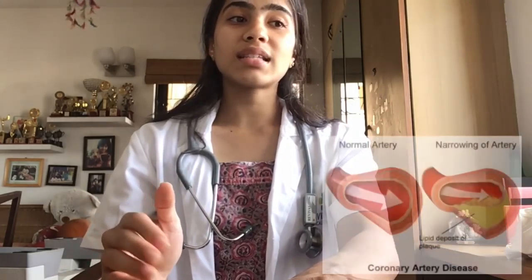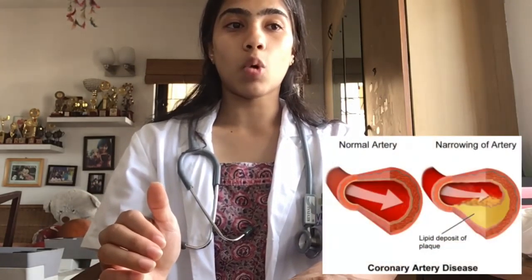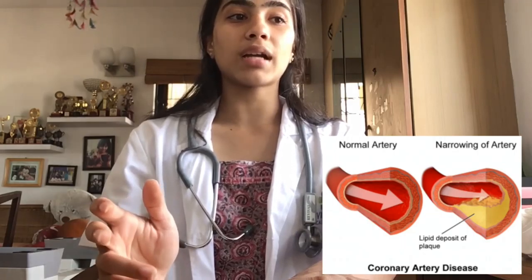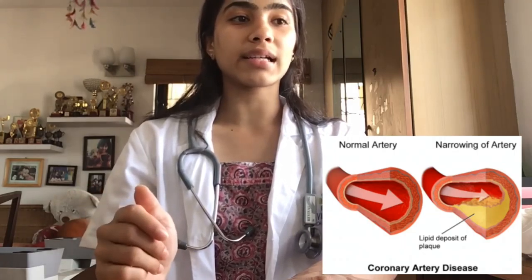Coming to the causes and development of CAD, experts think CAD starts with damage or injury to the inner layer of a coronary artery. This damage can even happen when you're a child. Plaque can start to collect along your blood vessel walls when you're young and build up as you get older. That buildup inflames those walls and raises your risk of blood clots and heart attacks.